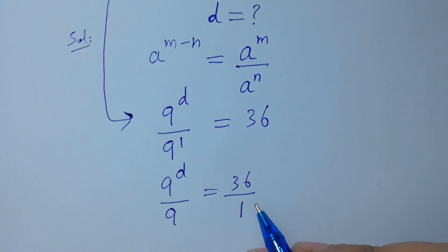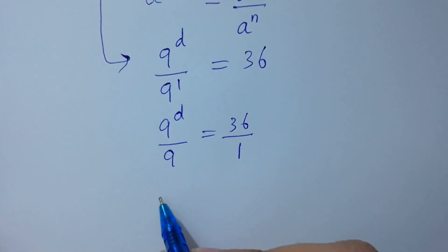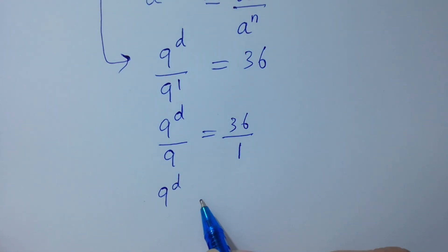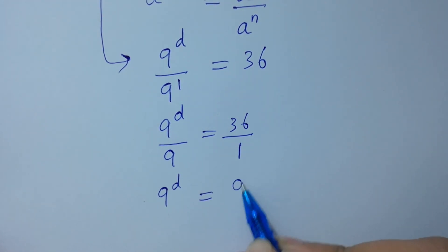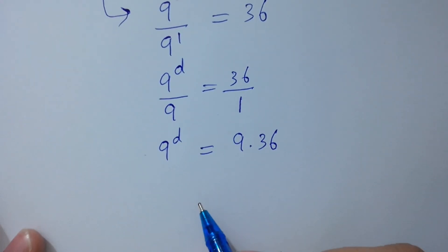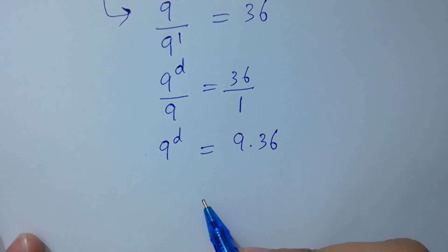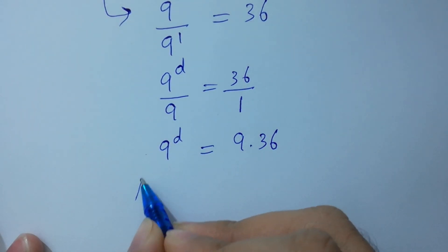By cross multiplication, we get 9 to the power d equal to 9 times 36. To solve this,